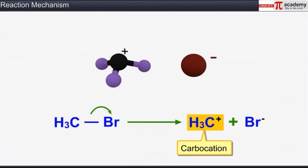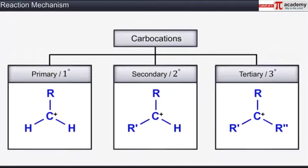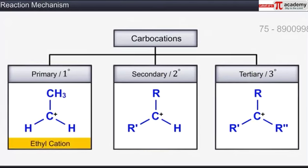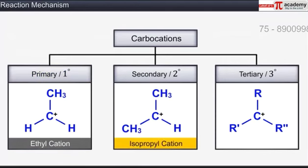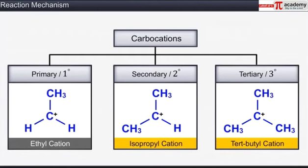Carbocations are very reactive as they have a strong tendency to complete their octet. Depending on the number of alkyl groups directly attached to the positively charged carbon, carbocations are classified as primary, secondary, and tertiary carbocations. For example, ethyl cation is a primary carbocation while isopropyl and tert-butyl carbocations are secondary and tertiary carbocations respectively.